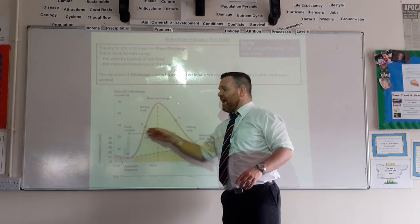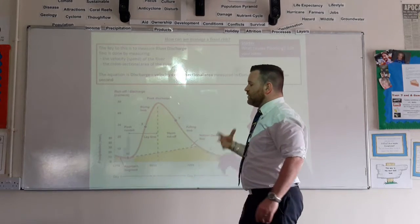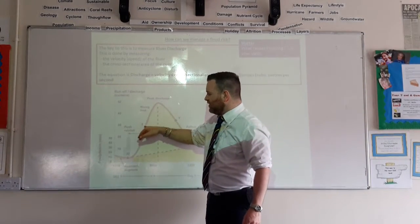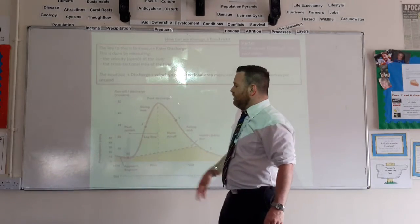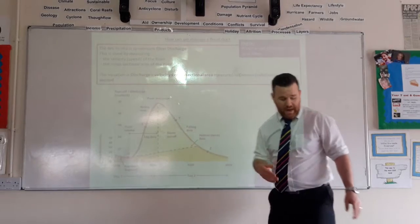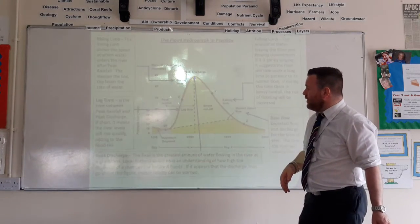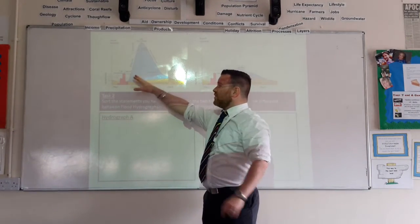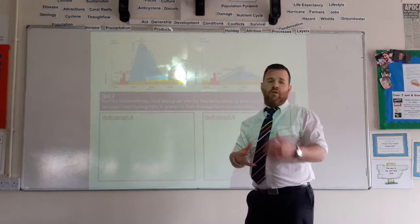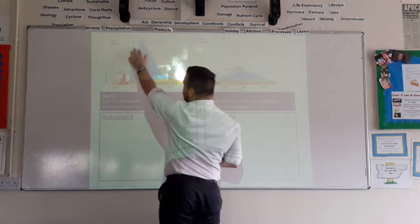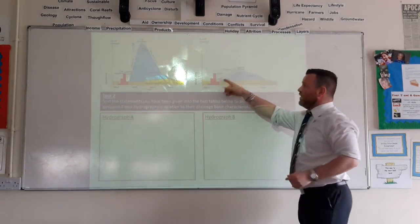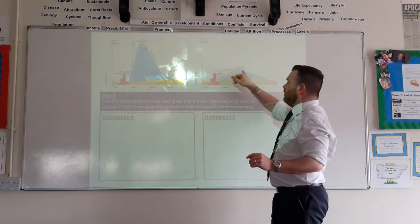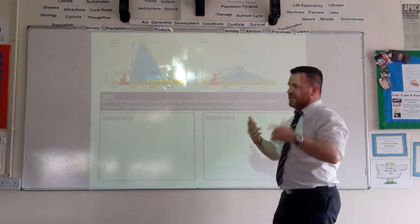So that's what our flood hydrograph is, that's its key features. You might get one of those and it might ask you what the discharge is — you'd read across and measure the discharge. It might blank out some of the terms and ask you what terms are missing. When you've got a graph with a steep rising limb and then a steep falling limb, you've got a river that's prone to flooding, like flash flooding — the river level rises very quickly and falls very quickly. When you've got a gentle rising limb and falling limb, you're talking about a river that takes a while to flood; it takes time for peak rainfall to actually reach the river and then for the river to increase its capacity.